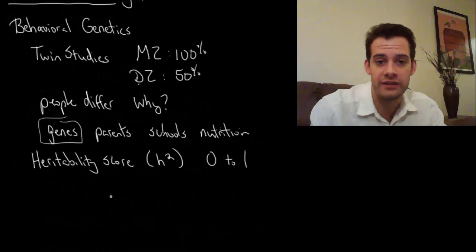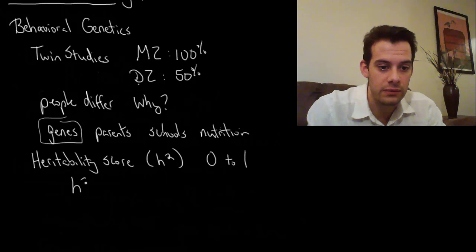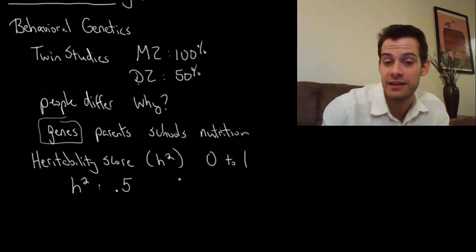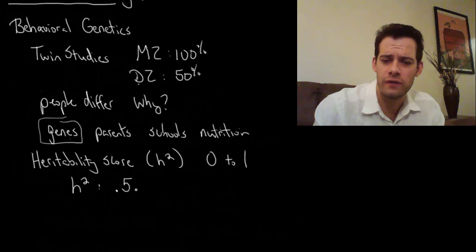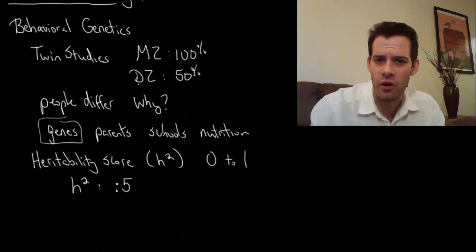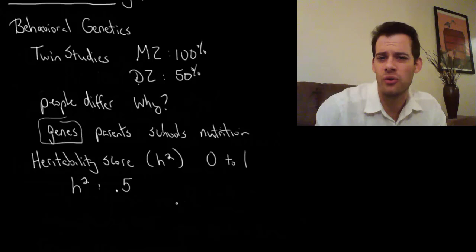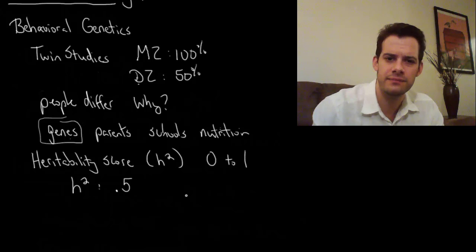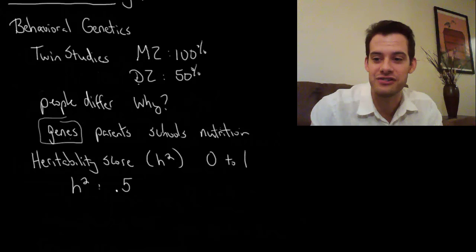So let's use the example of IQ. The heritability score for IQ is about 0.5 and it actually varies in different populations. One sort of strange thing is that as people get older, we look at populations of elderly people, the heritability score is higher—it's about 0.8. So you can think about why that might be and I'll come back to a possible explanation in a few minutes.